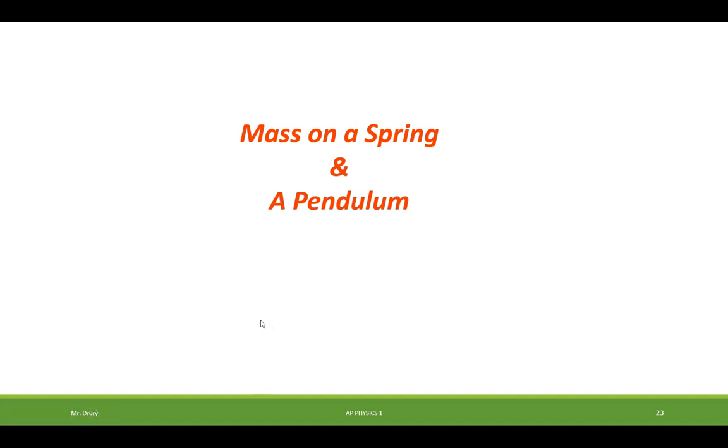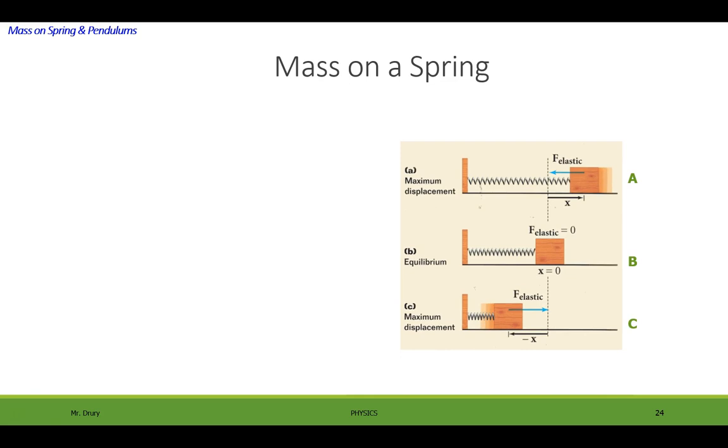Today we'll be talking about masses on springs and the pendulum. So the first thing we're going to do is look at a mass spring system and see if we can analyze what's actually happening during the motion of a mass spring system. And we're going to look at three distinct positions. A is where it's stretched out to a maximum displacement x. B is where it's back in the equilibrium position. And C is where the spring is compressed. So I want you to look and ask yourself a series of questions.